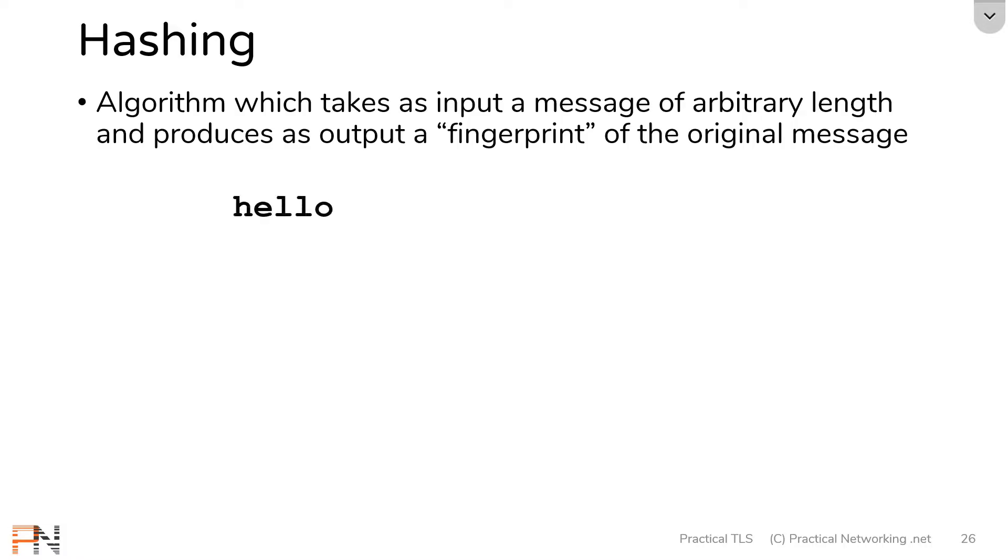For example, let's say I started with the word hello, and I processed it through a hashing algorithm which simply adds up the letter values. So H is the 8th letter of the alphabet, E is the 5th letter, L is the 12th letter, and so on. If I add all those up together, I get the number 52. This 52 is the representational fingerprint of my original message. That's what a hashing algorithm does.